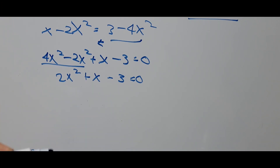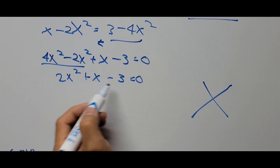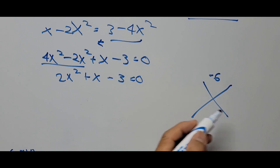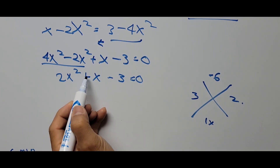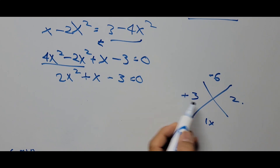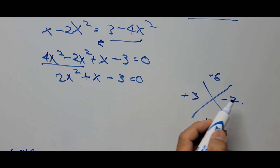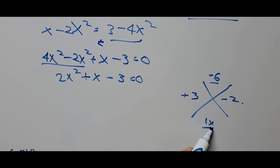We can solve for x using factoring or the quadratic formula — we'll use factoring. The leading coefficient times the constant is 2 times negative 3, which is negative 6. We need two factors of negative 6 that add to positive 1 (the middle coefficient). The factors are positive 3 and negative 2, since 3 times negative 2 is negative 6, and 3x minus 2x equals x, the middle term.